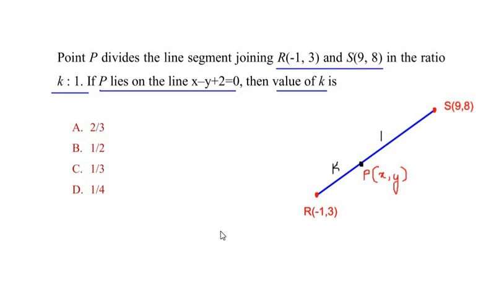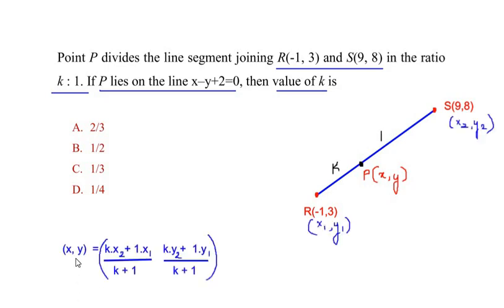Now the section formula for the point dividing the line is given as (x, y) = ((kx₂ + 1·x₁)/(k+1), (ky₂ + 1·y₁)/(k+1)). Here I have taken the point R as x₁, y₁ and the point S as x₂, y₂.